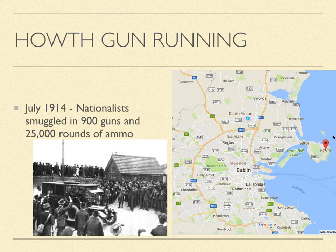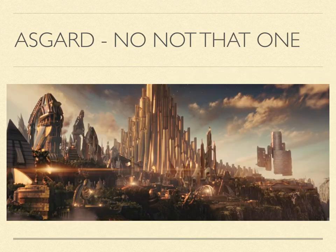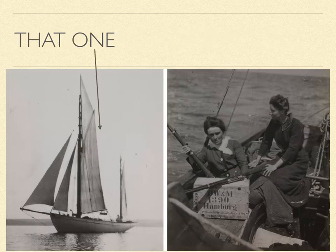These guns were brought to Howth, off the coast of Dublin, in a ship called the Asgard. This is the ship known as the Asgard, and the whole incident is known as the Howth gun running.